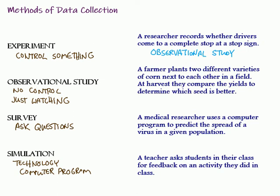Second one: a farmer plants two different varieties of corn next to each other in a field. At harvest, they compare the yields to determine which seed is better. Did they control something? Yes — they picked two different kinds of corn, planted them next to each other, and are looking at the results. So we're looking at an experiment, and often they call those test plots in farming. The farmer controlled what varieties of corn they planted. Nobody's asking questions, no computer stuff involved, so this must be an experiment.